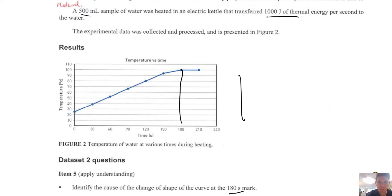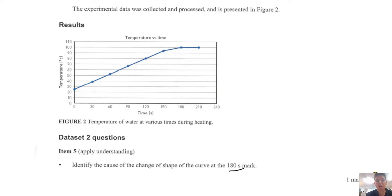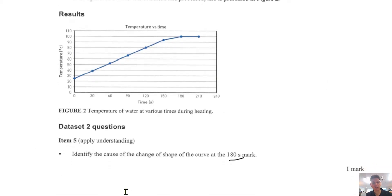So pretty much why did it go from an incline to flat? So hopefully you know already. When it's flat on the graph, all of the energy goes into changing state. So it's changing from water to a gas before the energy was going into increasing the temperature.